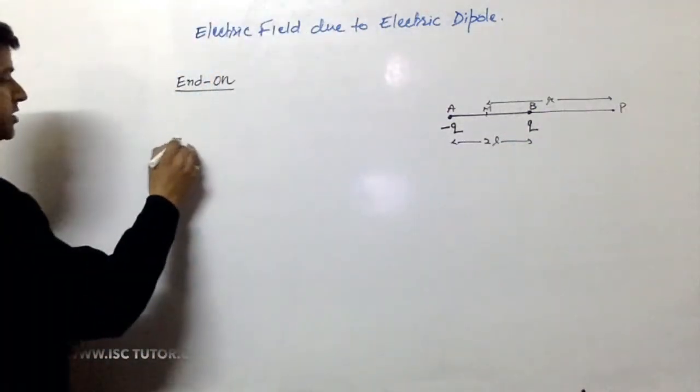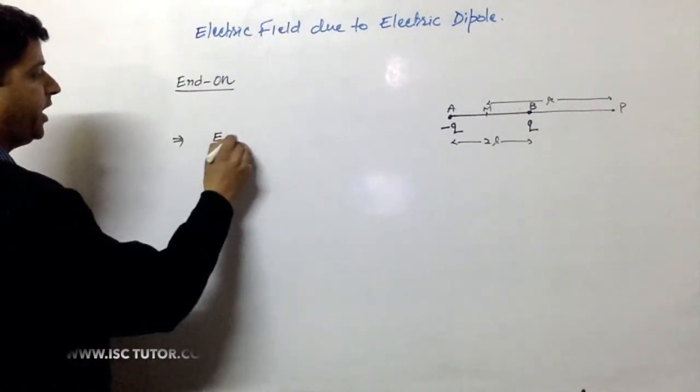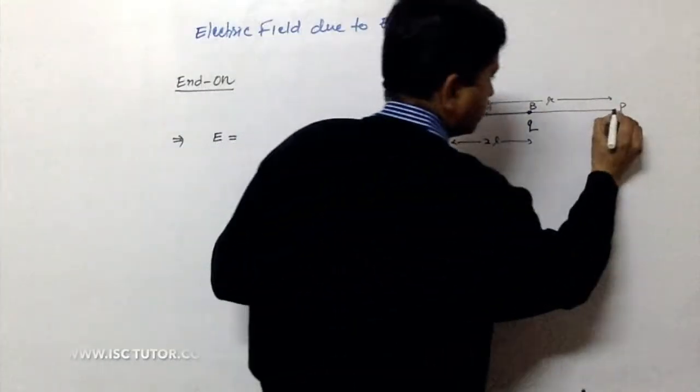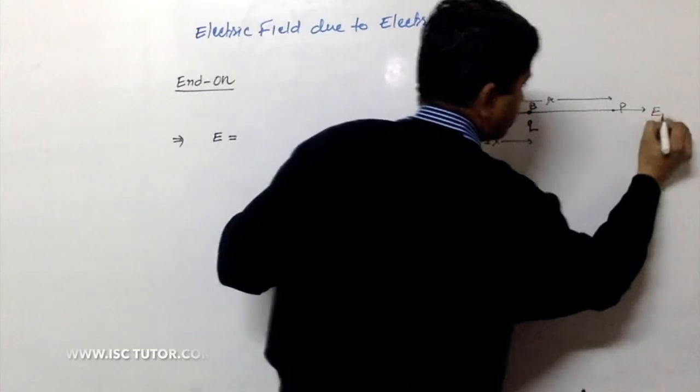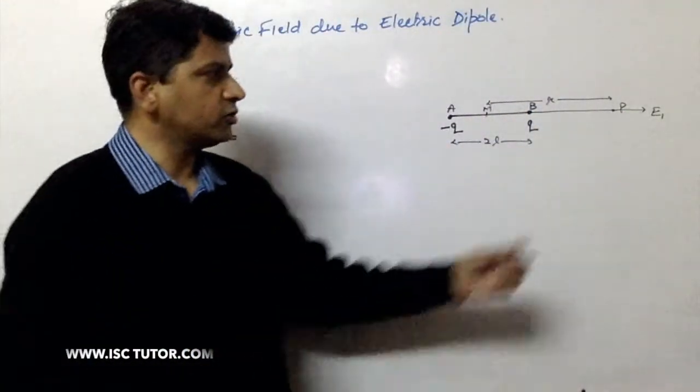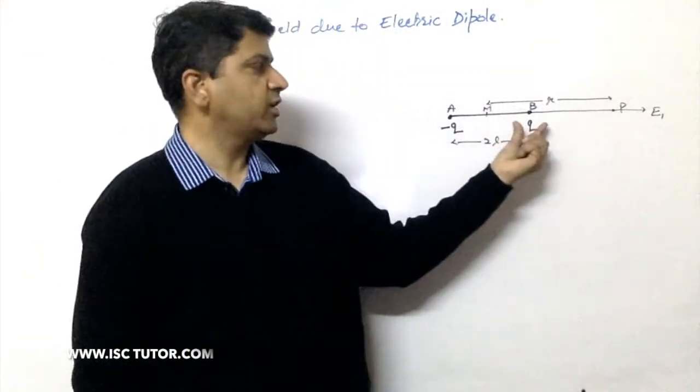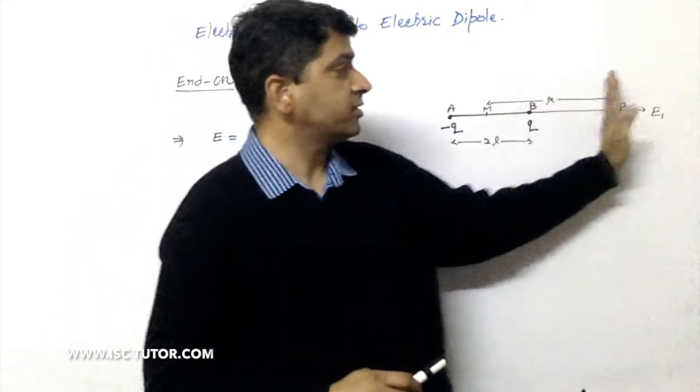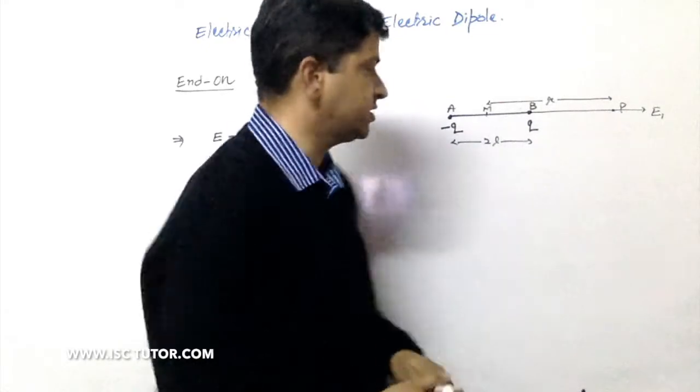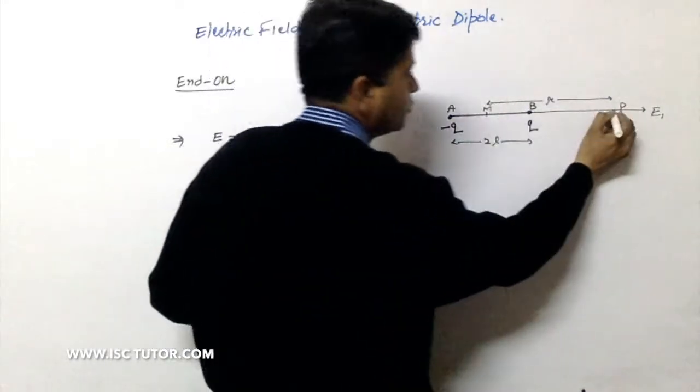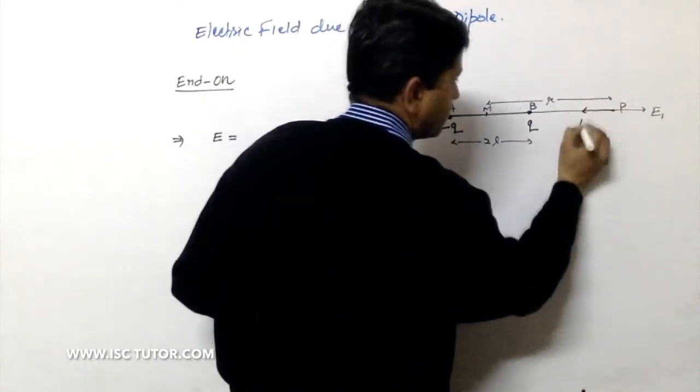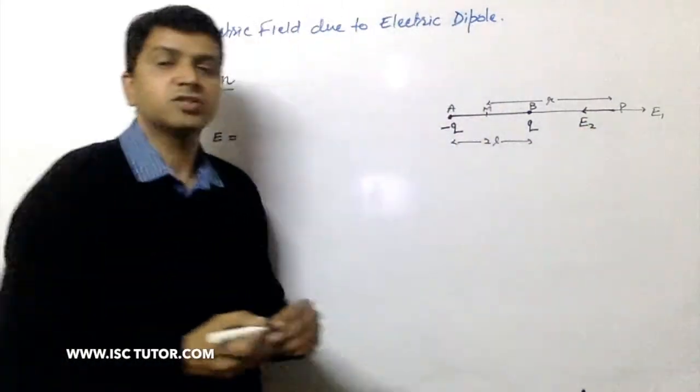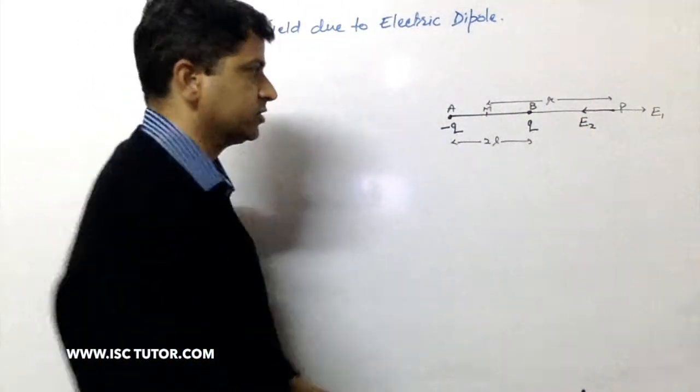In this situation, electric field at P, I'm marking here E1 because E1 is the electric field due to the charge at B. So that will be repelling, it's away from that charge. Similarly, electric field due to minus Q is towards because it's attractive in nature in that situation.